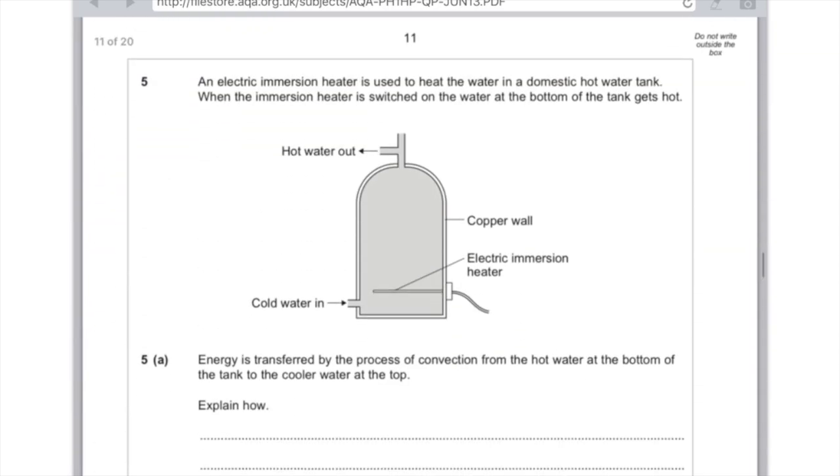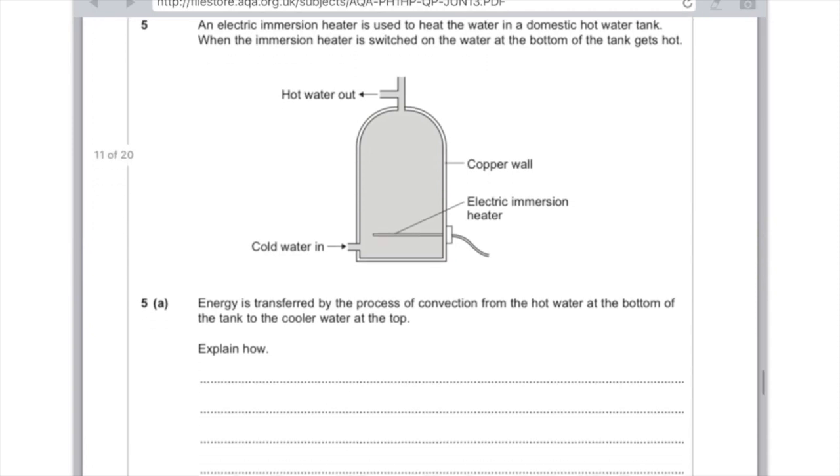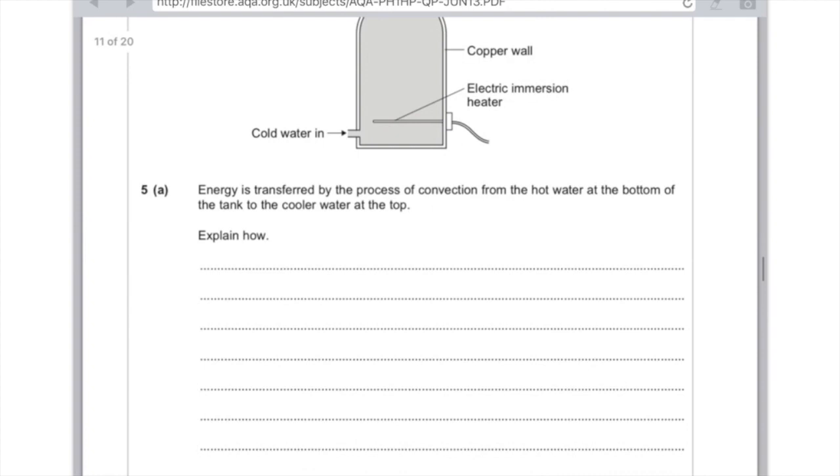An electric immersion heater is used to heat the water in a domestic hot water tank. When switched on, the water at the bottom gets hot. Energy is transferred by convection from the hot water at the bottom to the cooler water at the top. Explain how. The water particles move faster, move apart, causing the water to become less dense, and lastly, the hot water rises.